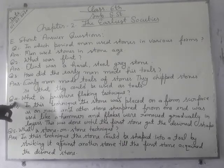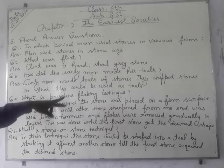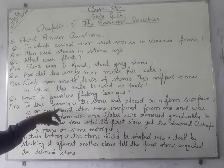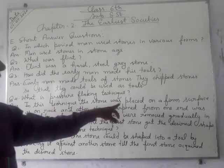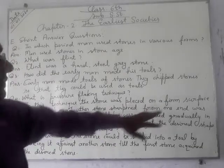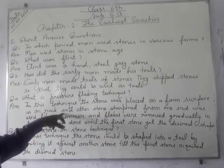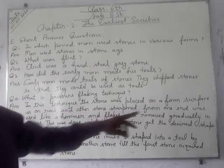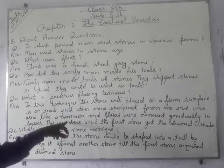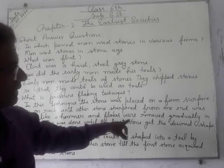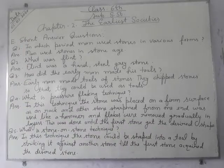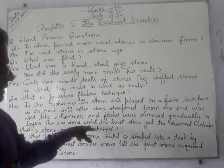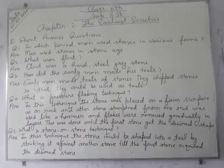Question number four: what is the pressure flaking technique? In this technique, the stone was placed on a firm surface such as a rock, and another stone sharpened at one end was used like a hammer. The flakes were removed gradually in layers until the first stone got the desired shape.